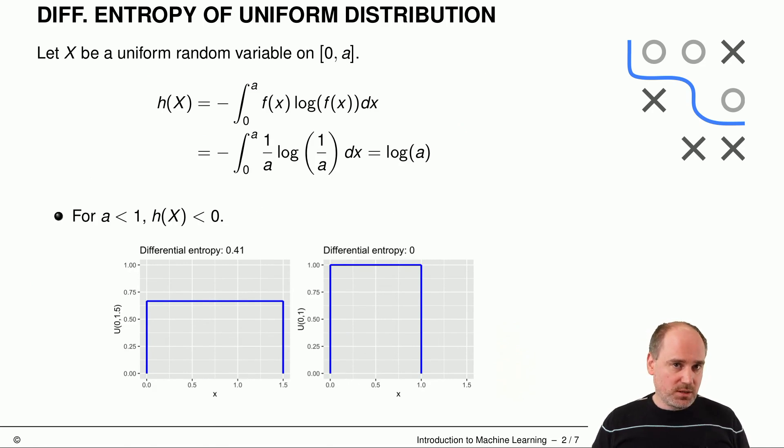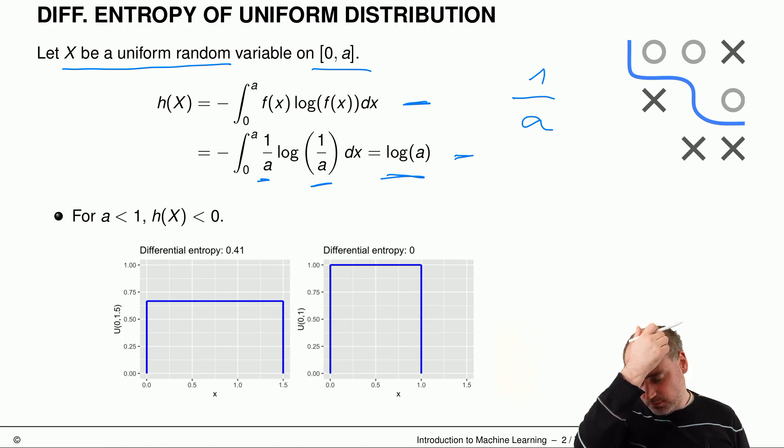Here's a further example. So let's now calculate the differential entropy of a continuous uniform distribution. Let's assume we have a uniform random variable on this interval here, which goes from 0 to A. Then it's pretty obvious that we have a density value of 1 divided by A for each element here in this interval. And we can now simply compute our differential entropy by writing down the formula for differential entropy, plugging in the density. We simply figure out that log of 1 divided by A is minus A, and then lots of stuff here cancels out. And at the end, we just get log of A.